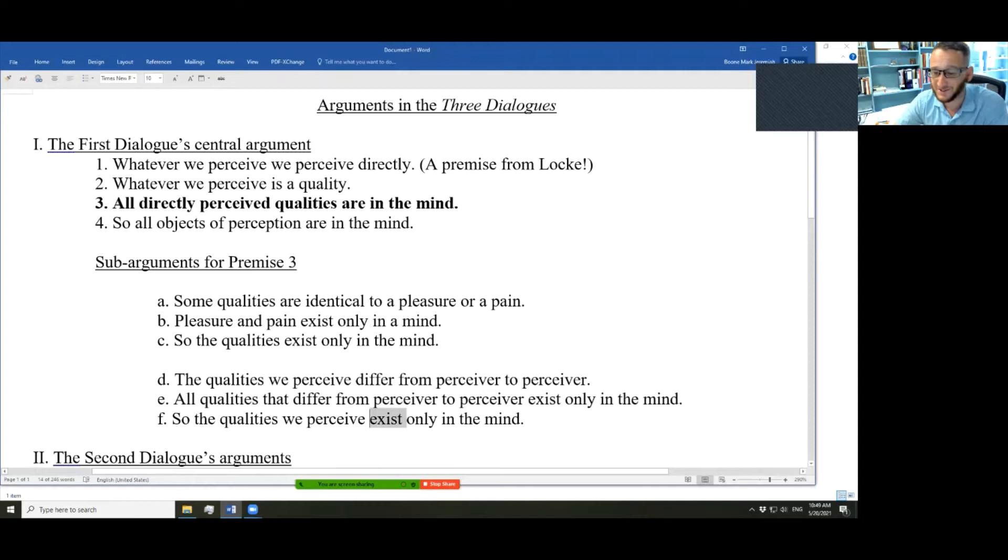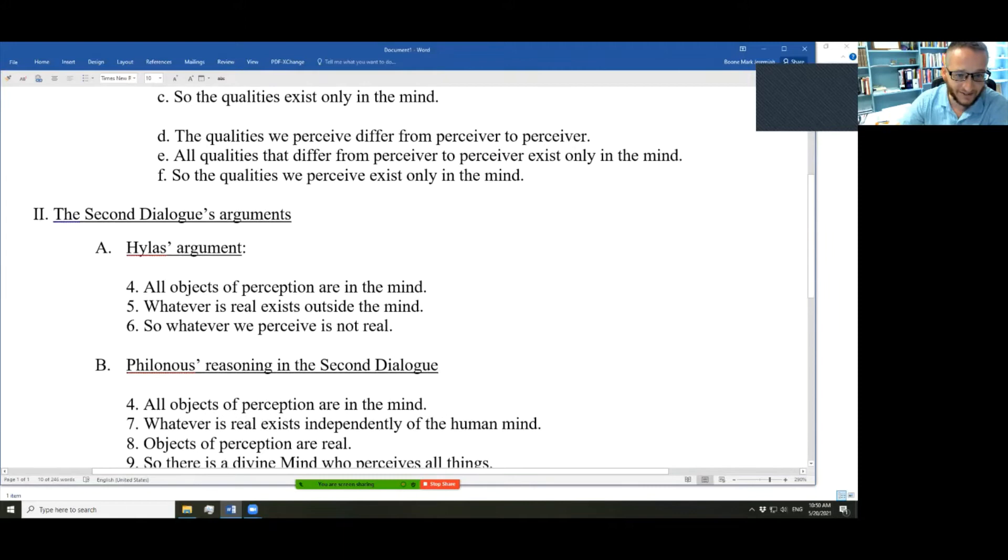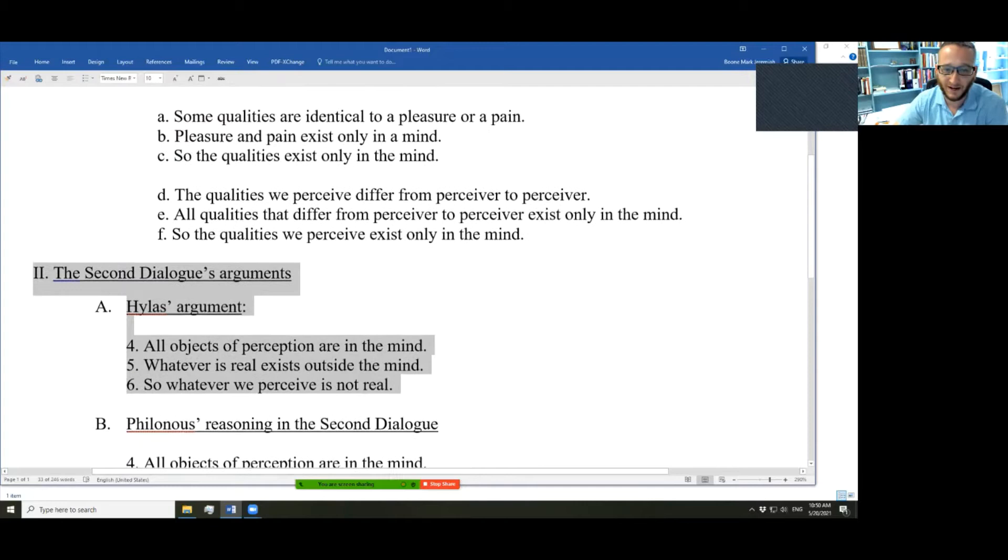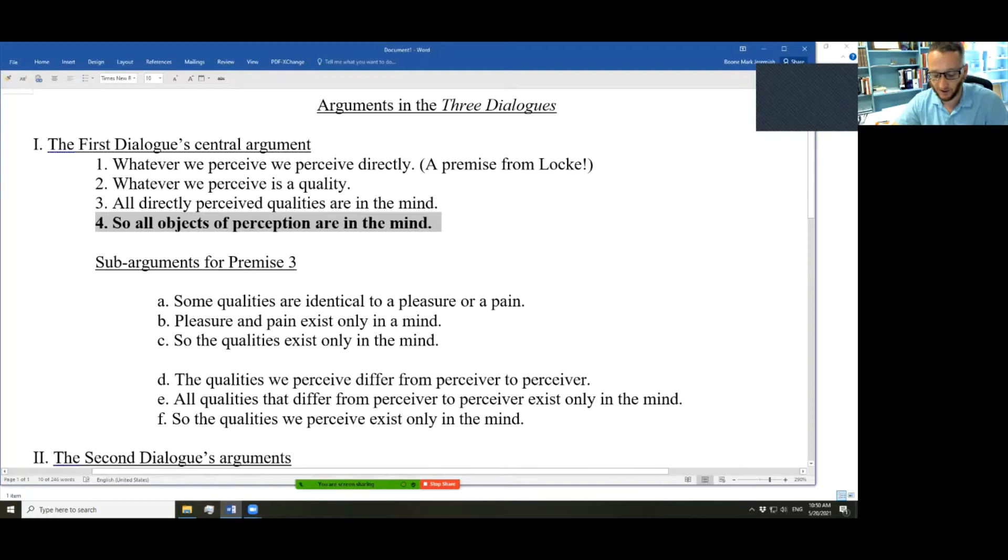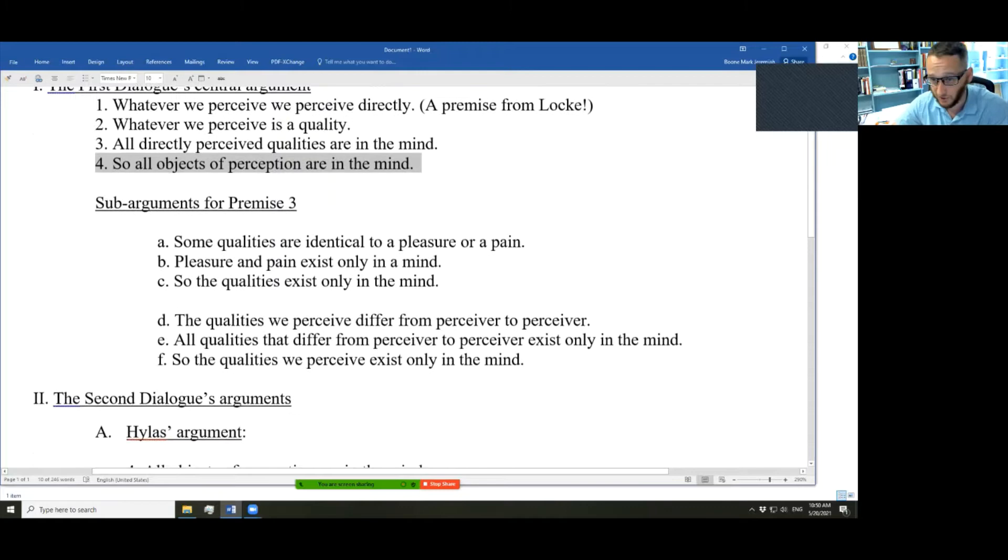So all this leads us to this conclusion. All objects of perception are in the mind. Now note that we are recycling this. This is the conclusion of the first dialogue, and it becomes a premise in later passages of the text. In logic class terminology, it's a subconclusion. It is a conclusion with respect to certain premises, but it is used as a premise for some later conclusion further on in the analysis. Okay, so all objects of perception are in the mind.